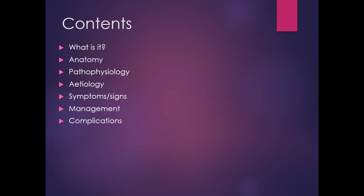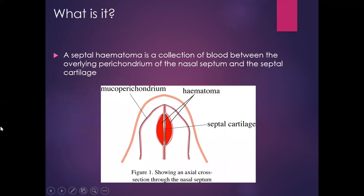Content: we'll talk about what a septal haematoma is and how it comes about, some of the nasal anatomy involved, pathophysiology, etiology and causes, symptoms and signs you should be looking for when assessing a patient with a possible septal haematoma, how to manage one, and what happens if we don't manage one correctly.